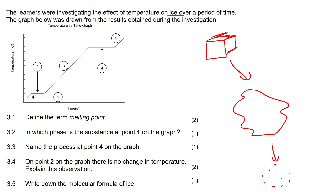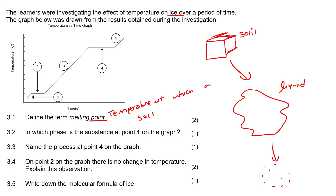The first question says: define the term melting. We know that melting is when you go from a solid to a liquid. So we can say it's the temperature — because they said the melting point — it's the temperature at which a solid becomes a liquid.